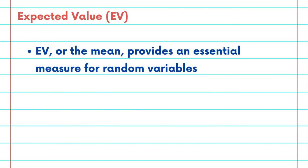The expected value, or the mean, provides a central measure for random variables. For discrete random variables, the expected value is computed as the sum of all possible values, each multiplied by its respective probability.